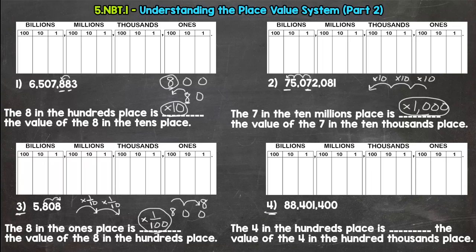Let's check number 4. We have a 4 in the hundreds place. And we are comparing that to the 4 in the hundred thousands place. So we are going from the 4 in the hundred thousands to the hundreds place. So 1, 2, 3 jumps to the right. 1, 2, 3.